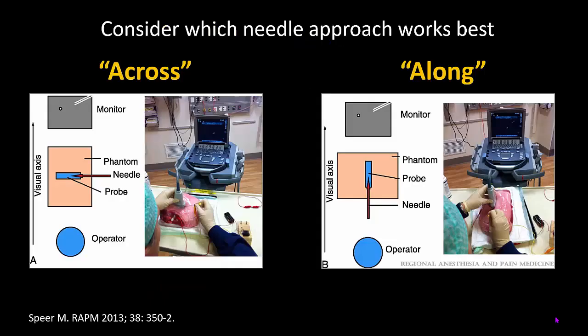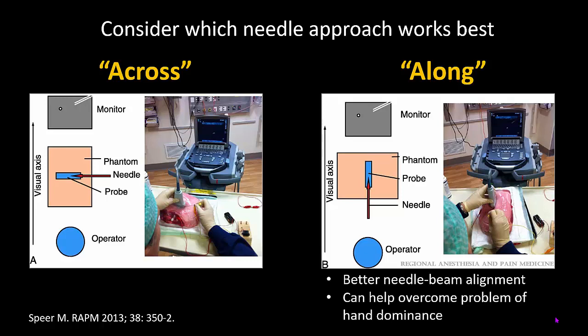Another consideration when setting up our position relative to the patient and machine is whether we want to be needling across our line of sight or along our line of sight. This has actually been studied, and the along approach results in easier and better needle-beam alignment in in-plane needling. It also addresses the issue of hand dominance, as you can always set it up to be using the same hand for needling, regardless of which side of the patient you are targeting.